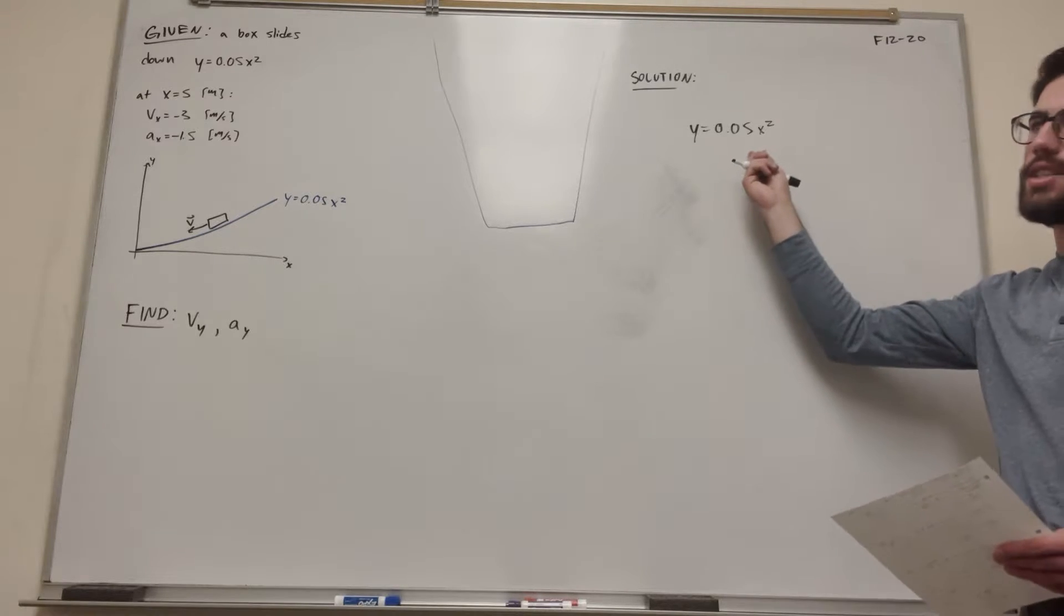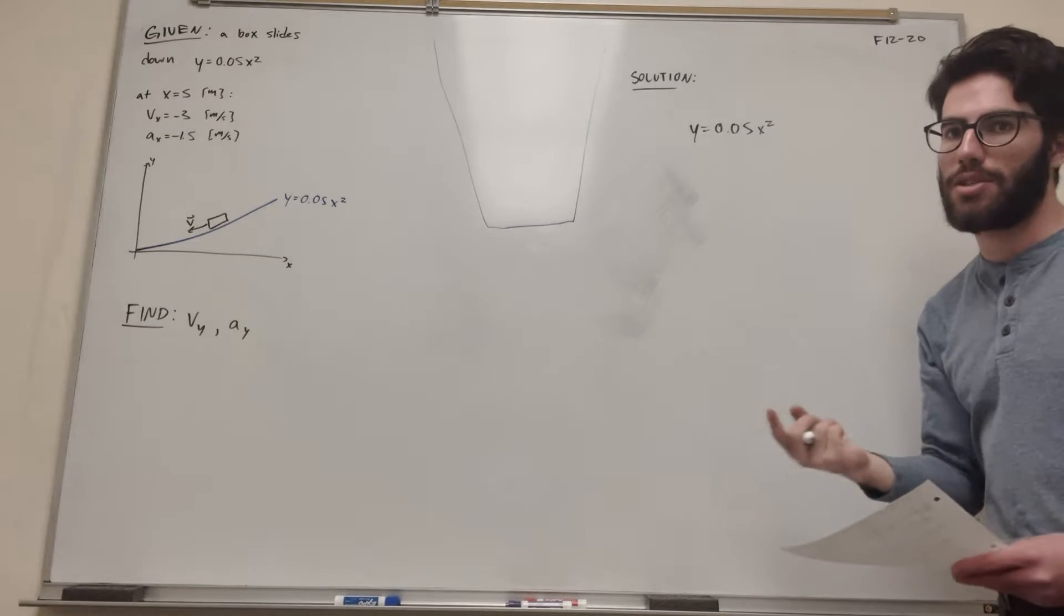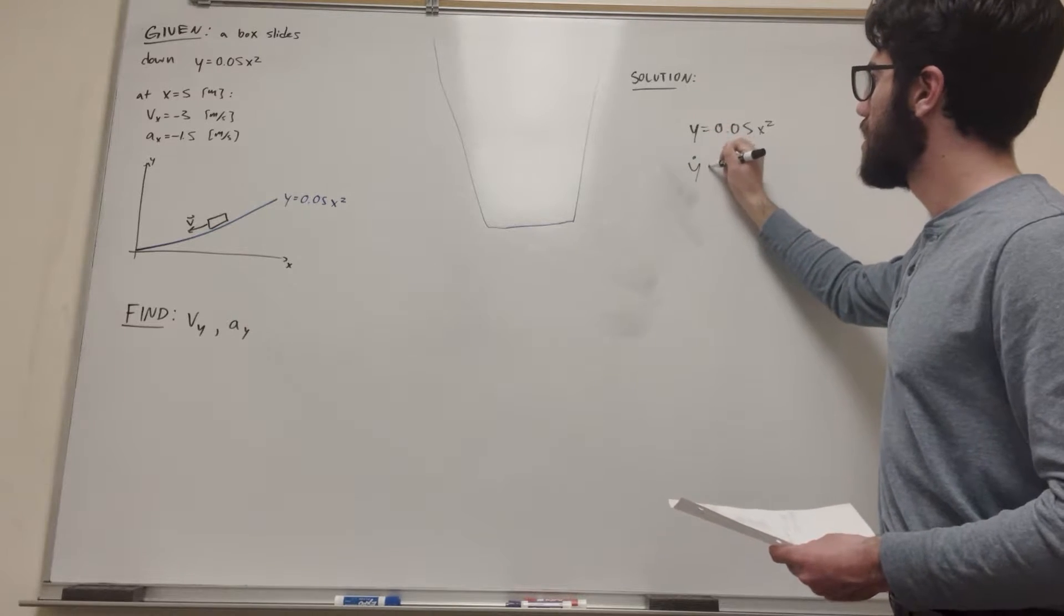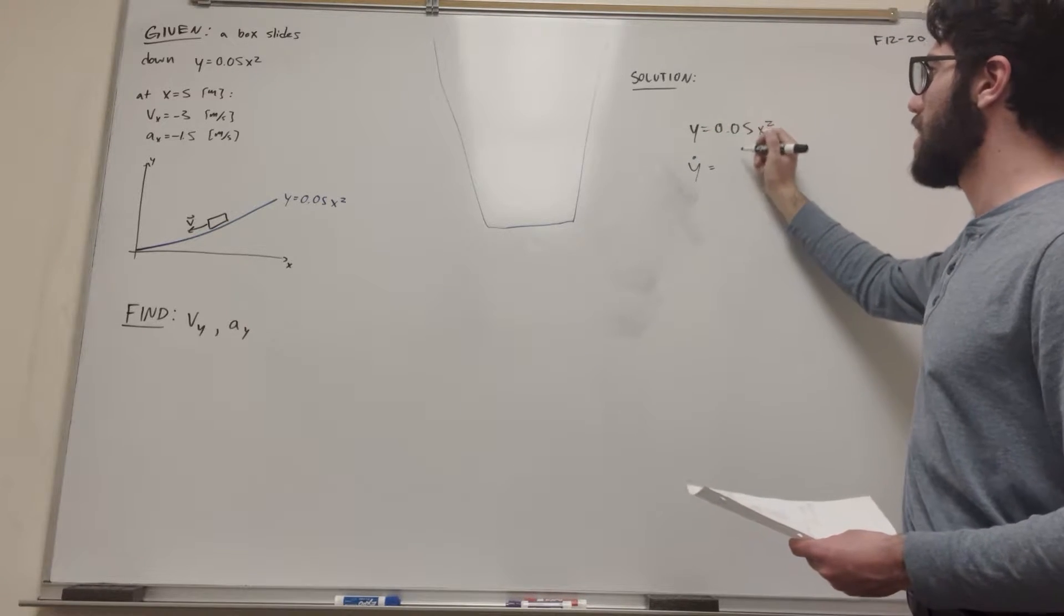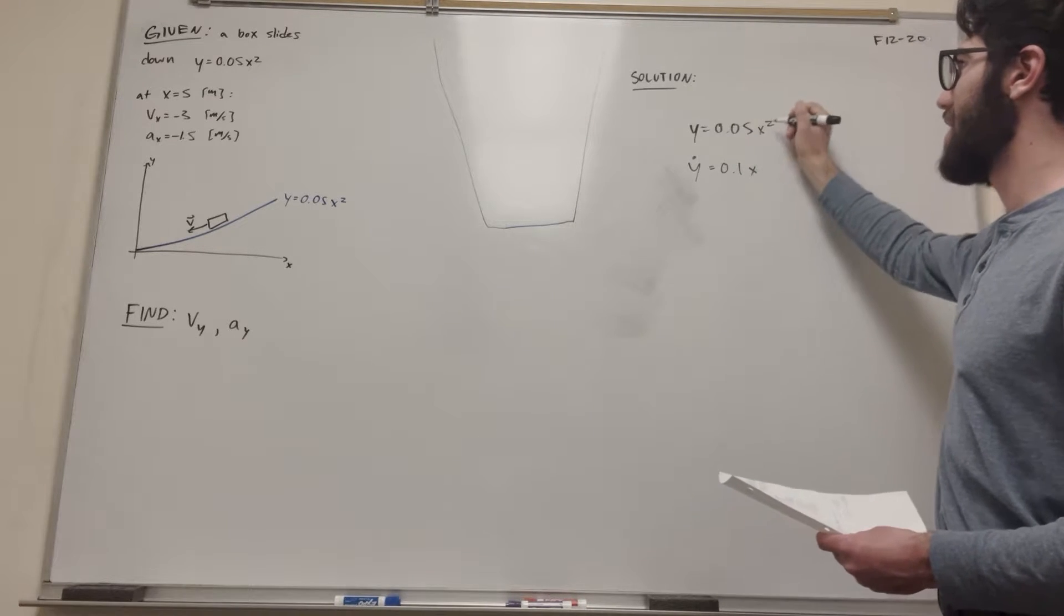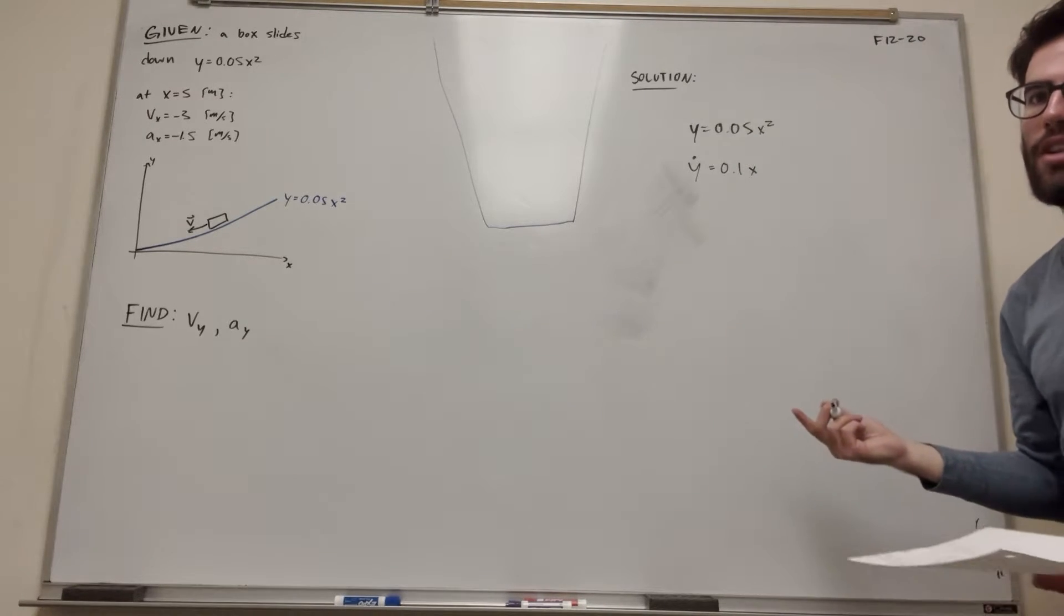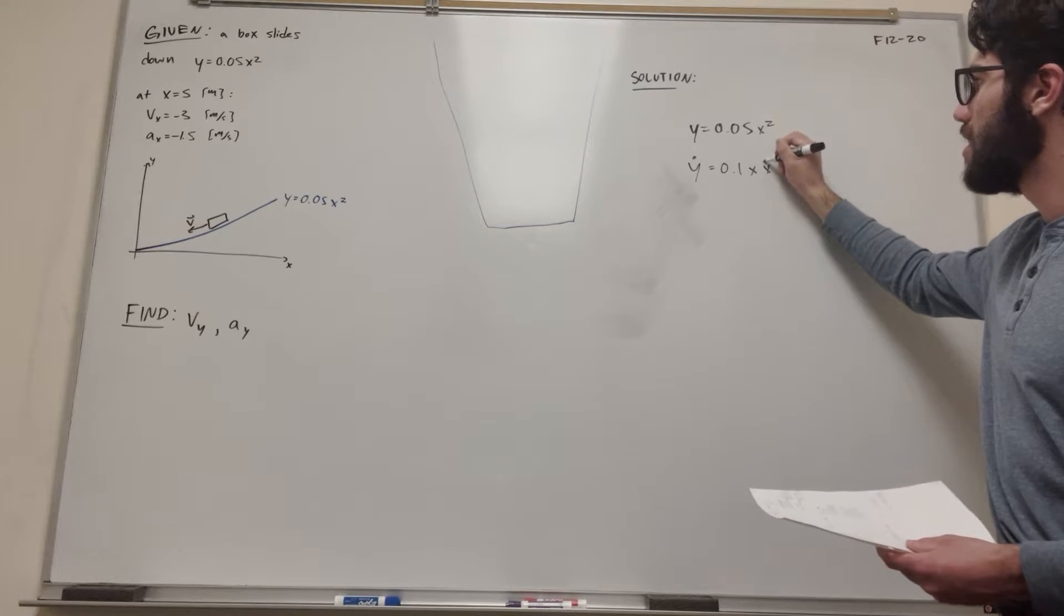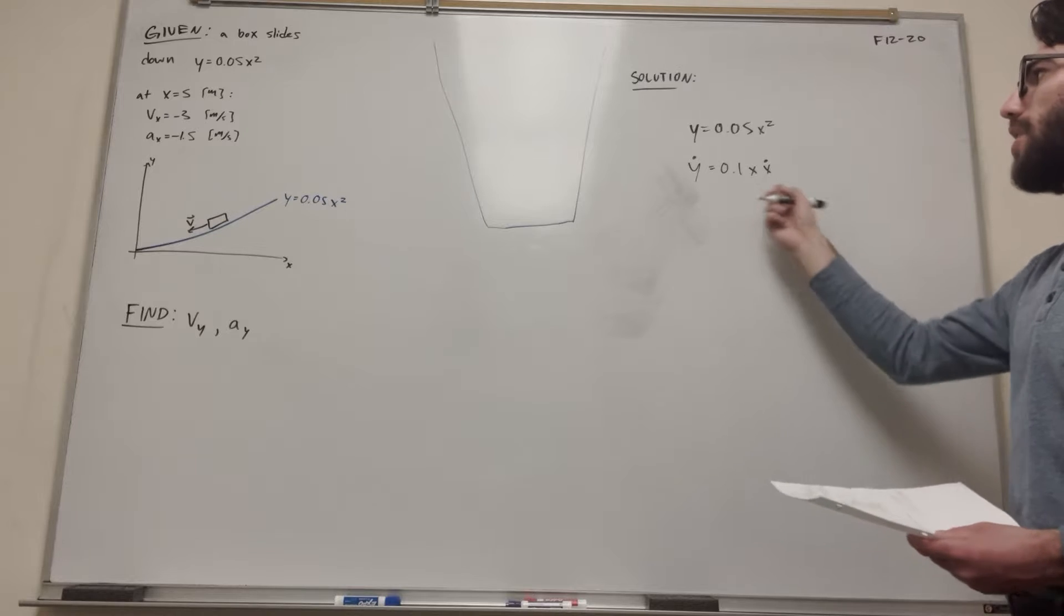Now we're going to need to find the derivative of this, but with respect to time, so we're going to need to use the chain rule. So let's go ahead and find y dot. Of course it's going to become, that 2 is going to come down, so this is going to become 0.1. Then there's going to be the x instead of the x squared. But now when we're taking the derivative of x with respect to t, we're going to get x dot.